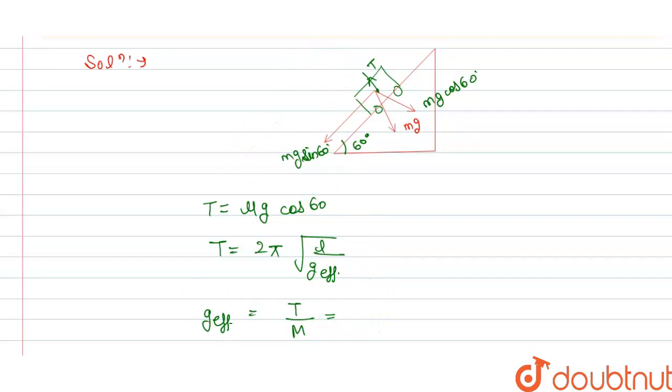So this is mg cos 60 divided by m. The m's cancel out, and cos 60 is 1/2, so this becomes g/2.